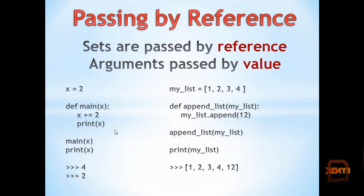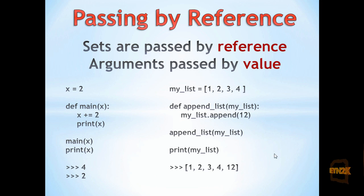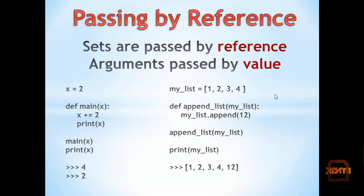Once we have exited our main function, we're again printing x, such that it reverts back to its original value of 2. On the left here, you can see once we call the function and pass the list to it and append the value 12 to it, although we exit the function before we print out my list, we still have the appended value of 12. This is because on the right we have passed the list by reference, and on the left by value. In general, sets are passed by reference and arguments are passed by value. Though if we reassigned a new list to my list, once we exited the function and printed out my list, we would still get the original value, because my list has been assigned globally.